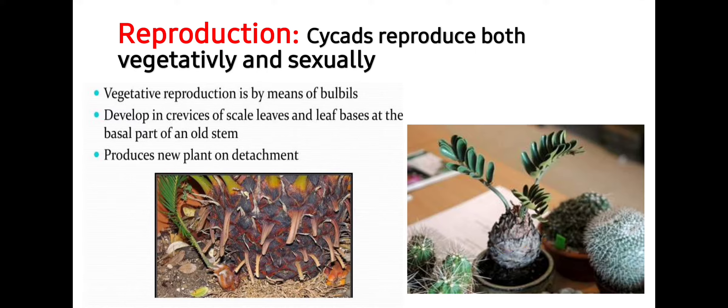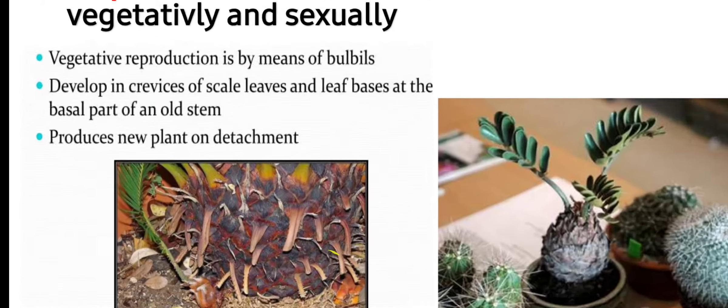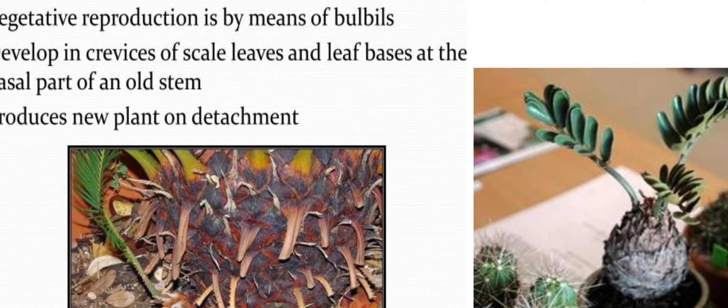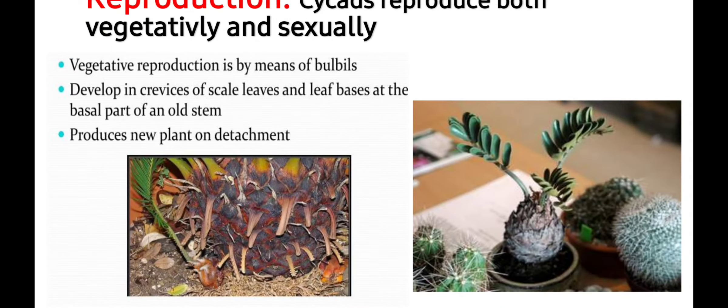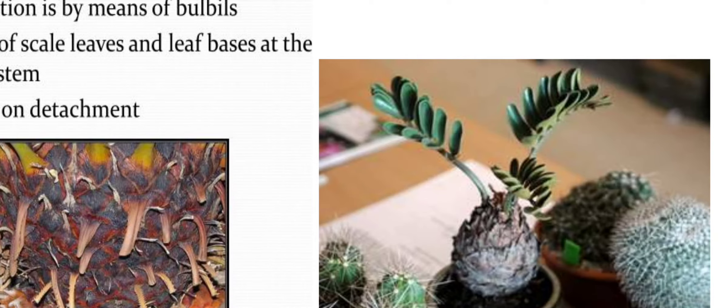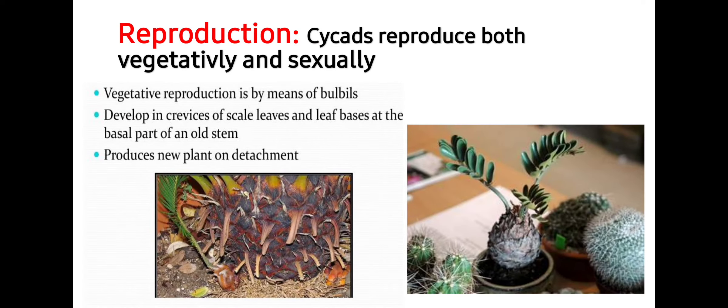Cycads reproduce both vegetatively and sexually. Vegetative reproduction is by means of bulbules. They develop in the axils of the scale leaves and leaf bases at the basal part of the old stem and produce new plants on detachment. Here you can see bulbules which arise at the leaf bases and in the second image you can see that they give rise to new plants.